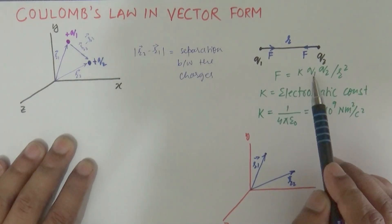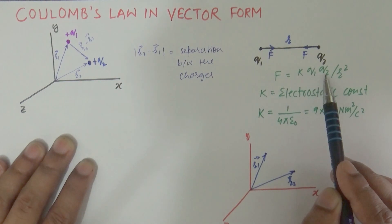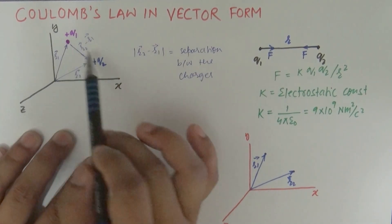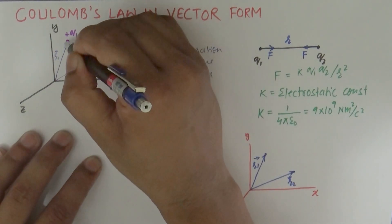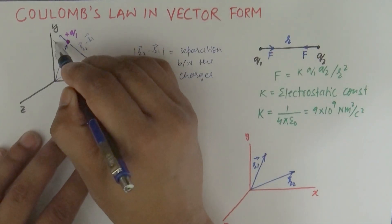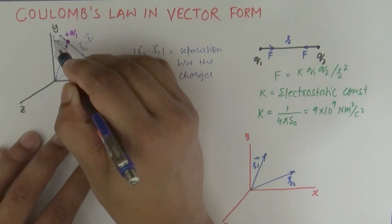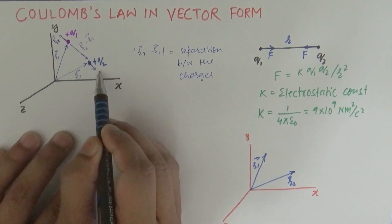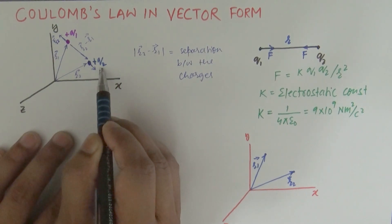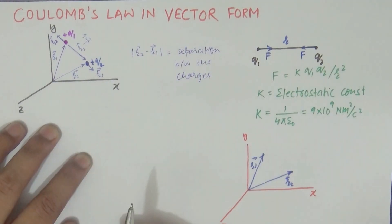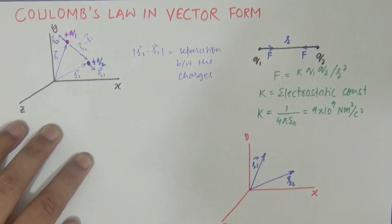The magnitude of force is k·q1·q2 divided by r squared. The force may be attractive or repulsive. Let's say both are positive, so the force is repulsive. The force q2 exerts on q1 is in this direction, and we call this force on particle one due to particle two as f12. Similarly, q1 exerts a repulsive force on q2, which we call f21, the force on particle two due to particle one. To write this in vector form, we need to understand unit vectors.